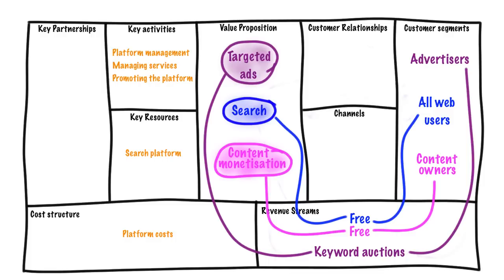What are their key resources? If they didn't have the technical search platform that they've got, they wouldn't be Google. They've got lots of other resources, with people being a good example, but their key resource is really the platform. And of course, that is also where the majority of their costs are. So their cost structure is dominated by platform costs. The engineers don't come cheap, but keeping the platform running contributes to the majority of costs.